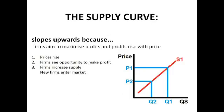Here is an image of a supply curve. You might be thinking: why does it slope upwards? Well, it slopes upwards because firms aim to maximise profits and profits rise with price. So when the price rises, firms see an opportunity to increase profit — they think, I'm going to make more and sell more and make more money. So they increase their supply, and supply increases.